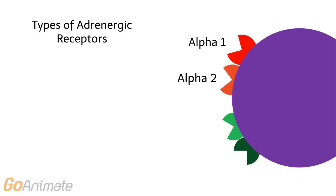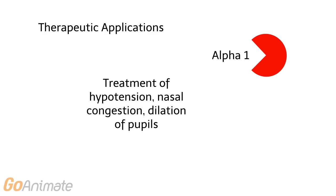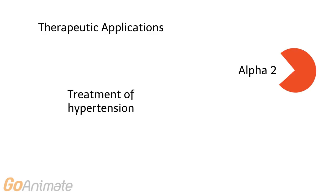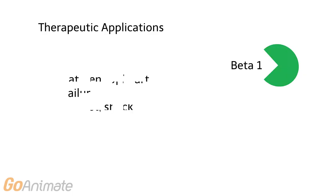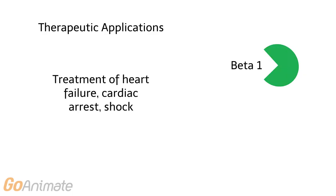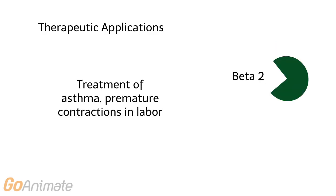There are four types of adrenergic receptors: alpha-1, alpha-2, beta-1, and beta-2. Drugs can affect one or more receptor types and have different actions depending on the receptor. Therapeutic applications for drugs affecting alpha-1 receptors include treatment of hypotension, nasal congestion, and dilation of pupils. Alpha-2 receptor drugs treat hypertension. Beta-1 receptor drugs are useful in treating heart failure, cardiac arrest, and shock. Beta-2 receptor drugs can be used to treat asthma and premature contractions of labor.